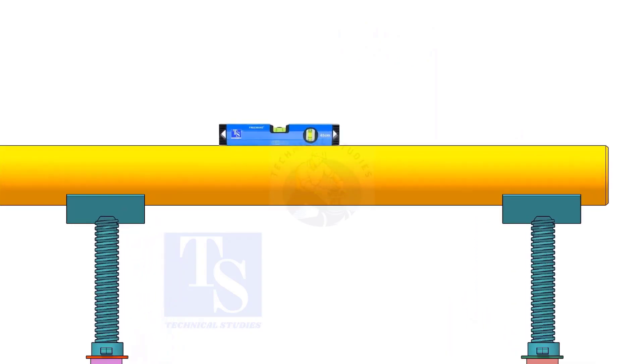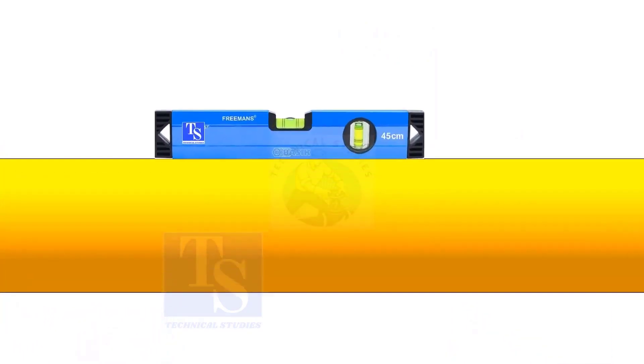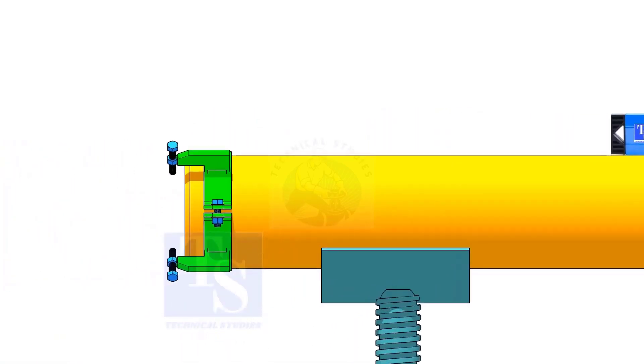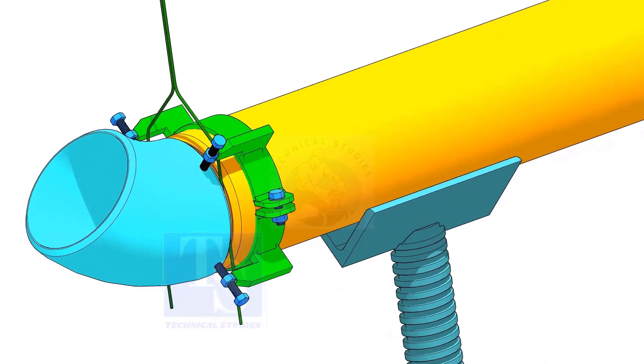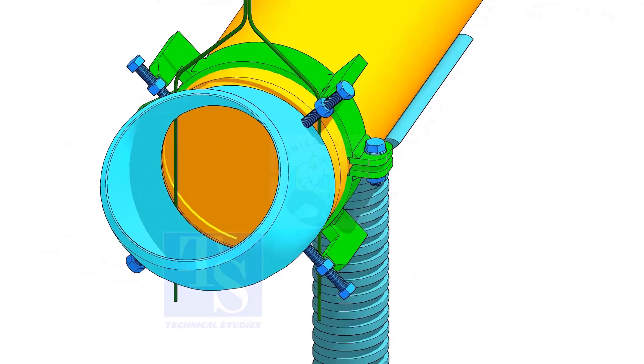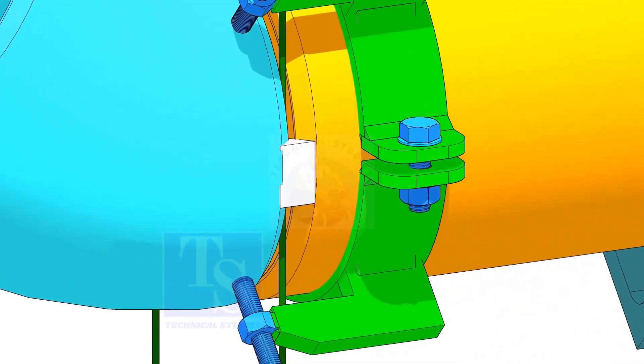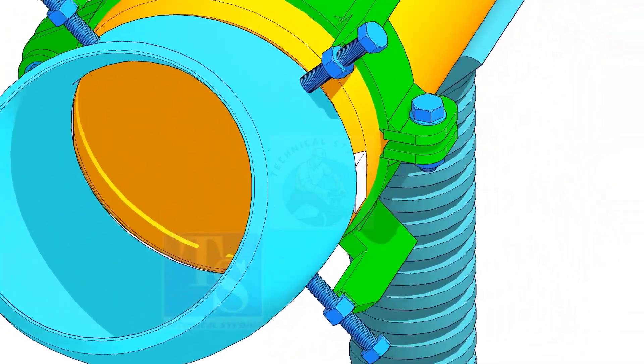This time, you need to level the pipe. After setting the gap and the overlap, tack weld on both sides of the joint.